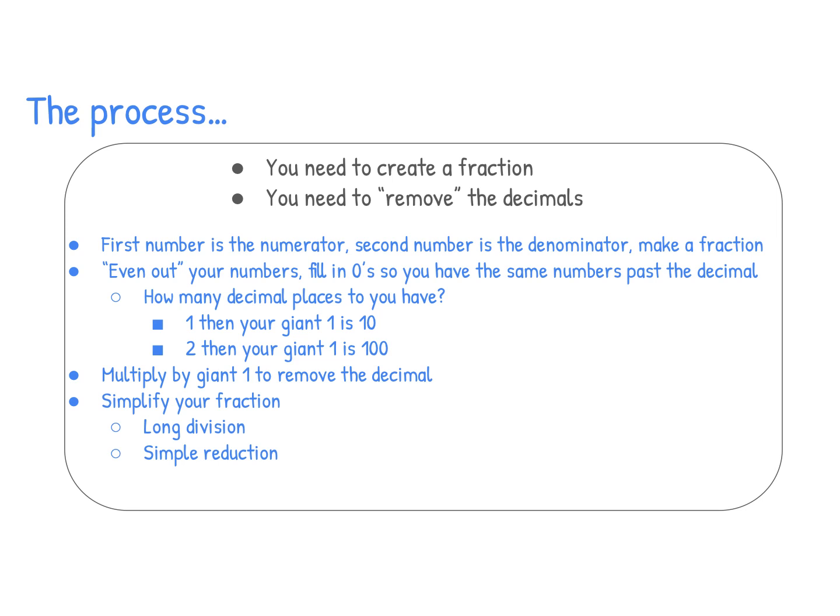A question you need to think about is how many decimal places do you have? If you have one decimal place, then your giant one will be 10 over 10. If you have two, your giant one will be 100 over 100. If you had three, it would be 1,000 over 1,000 and so on and so forth. The number of zeros is the number of decimal places.